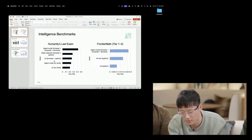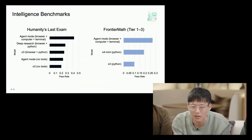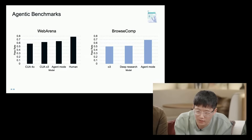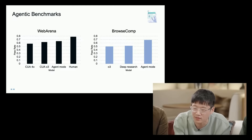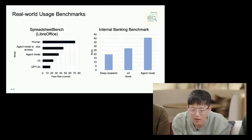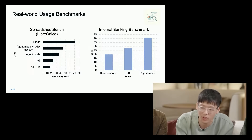This is an all-in-one agent that can truly handle multi-step tasks unlike anything seen before. Looking at the benchmarks, it's scoring around 42% on Humanity's Last Exam — quite impressive, though not as good as Grok 4 — and around 27% on Frontier Math, one of the hardest math benchmarks ever created. It's also state-of-the-art on Web Arena and Browse Comp, more agentic-based benchmarks, and performs exceptionally well on real-world usage benchmarks like Spreadsheet Bench and the Internal Banking Benchmark.